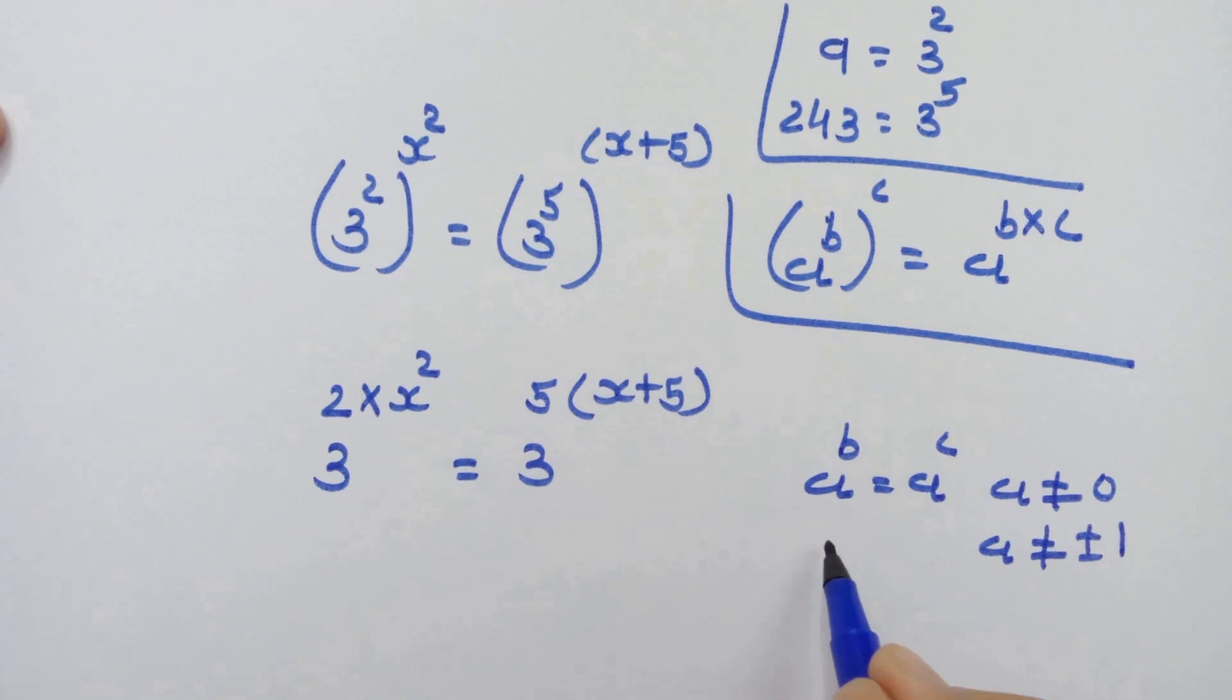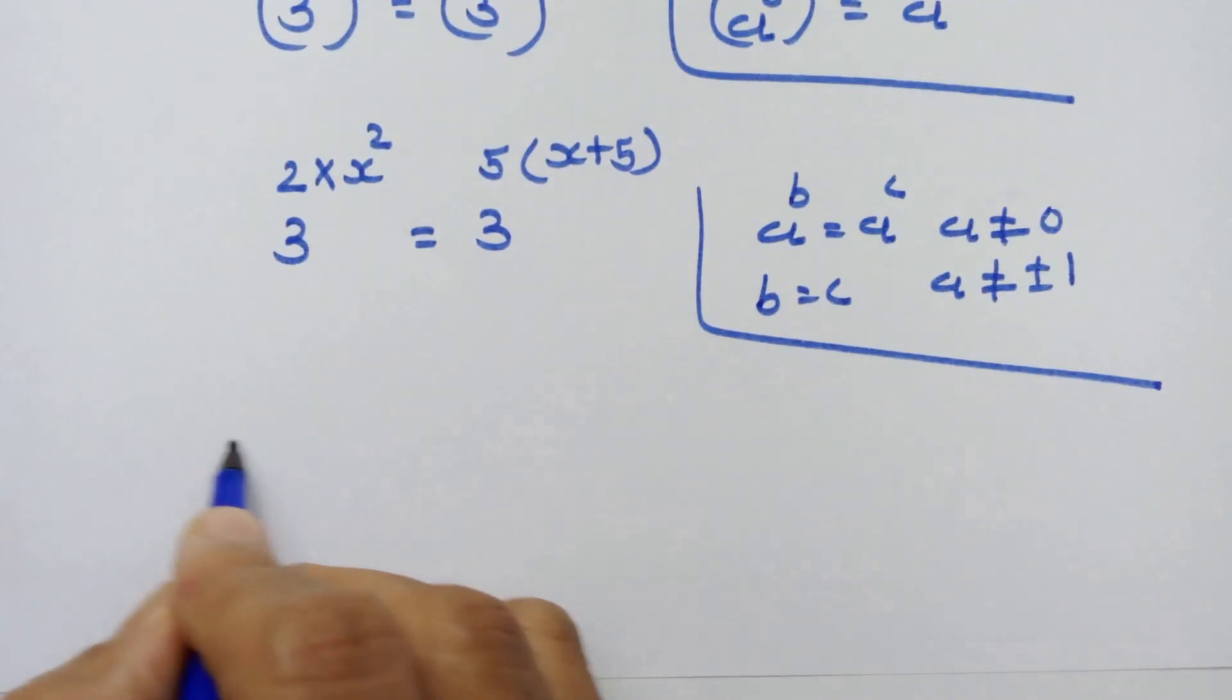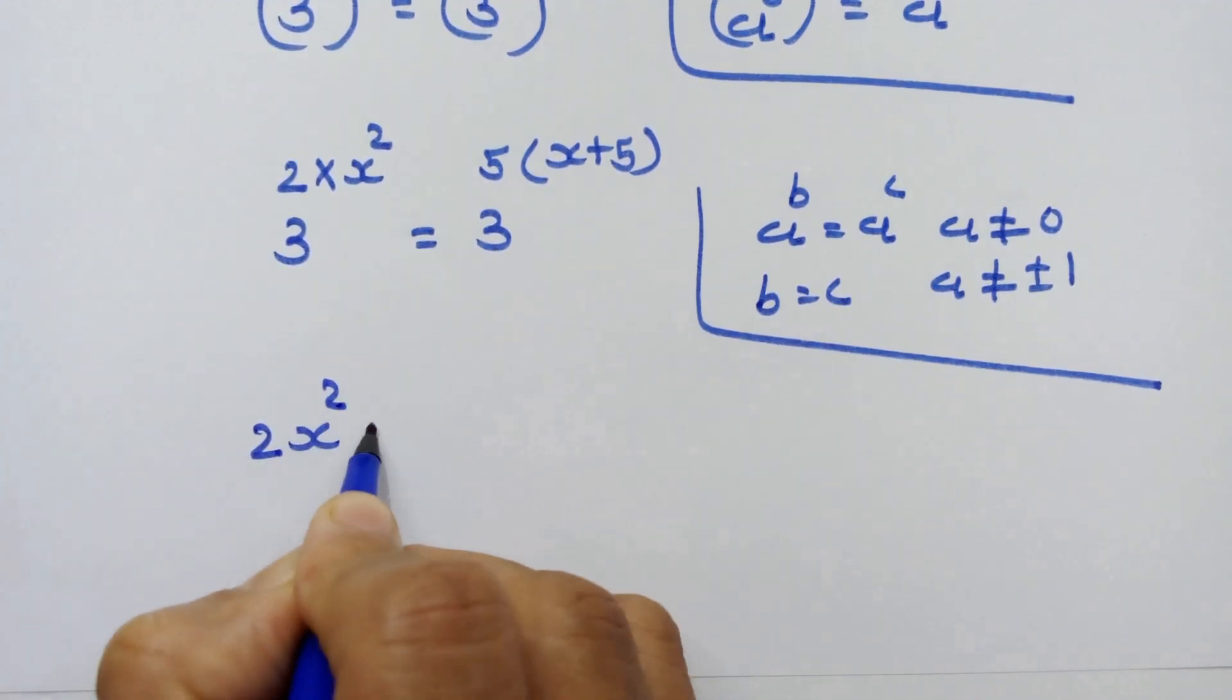So we just equate exponents: 2x^2 = 5(x+5).